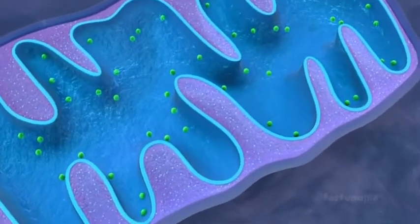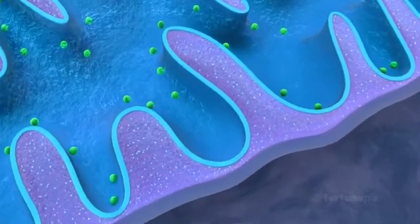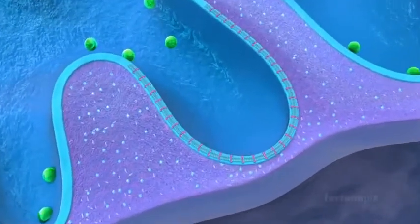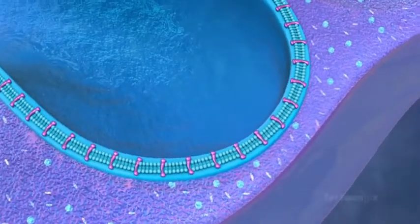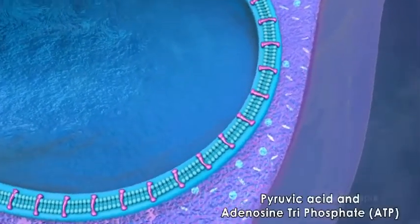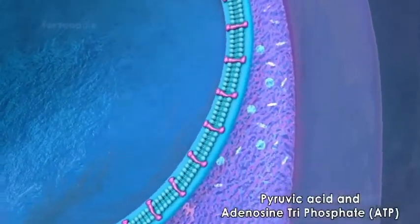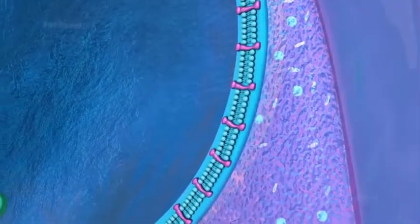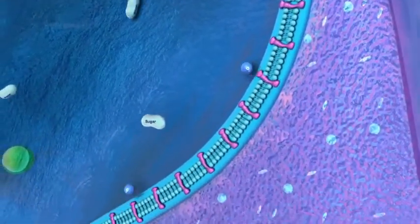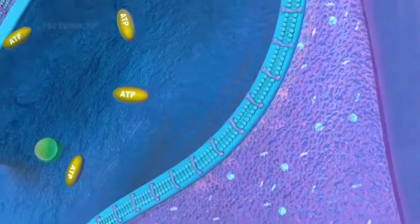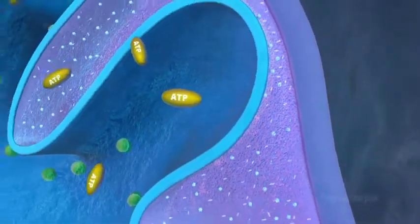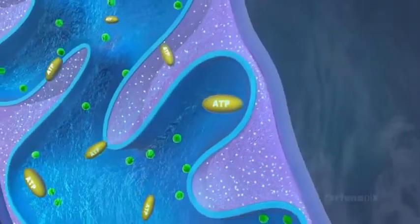The inner membrane is selectively permeable to certain molecules such as pyruvic acid and adenosine triphosphate, ATP. On the cristae, sugar is combined with oxygen to produce ATP, the primary energy source for the cell.